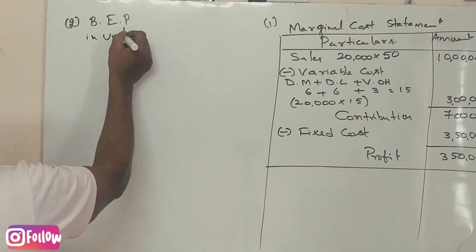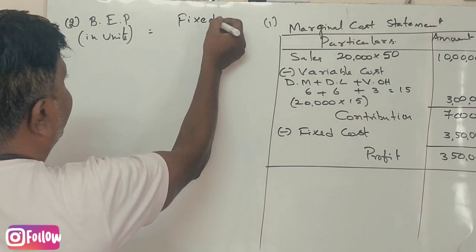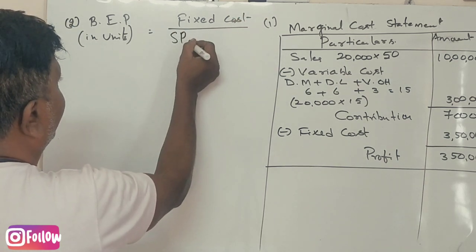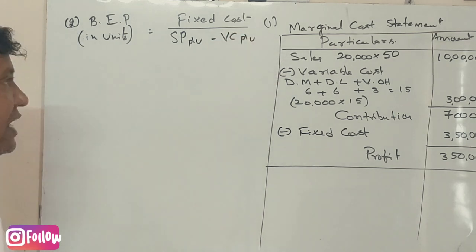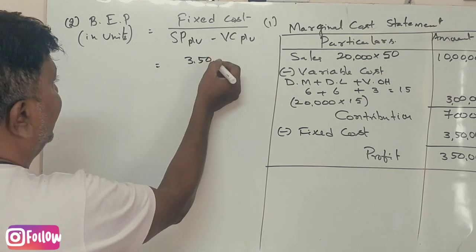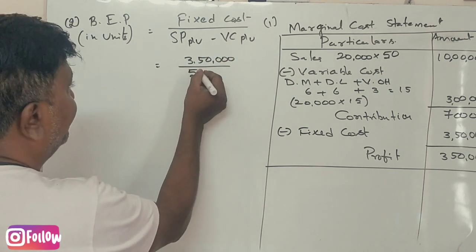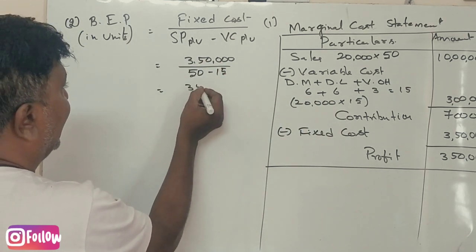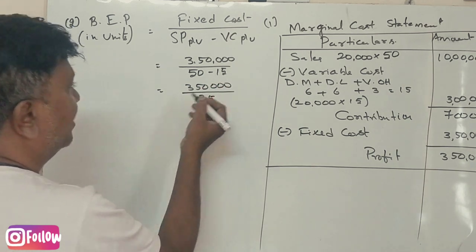To find the break-even point in units, the formula is: fixed cost divided by selling price per unit minus variable cost per unit. So that is ₹3,50,000 divided by selling price per unit. Variable cost is ₹15 per unit, so it is ₹3,50,000 divided by ₹35.